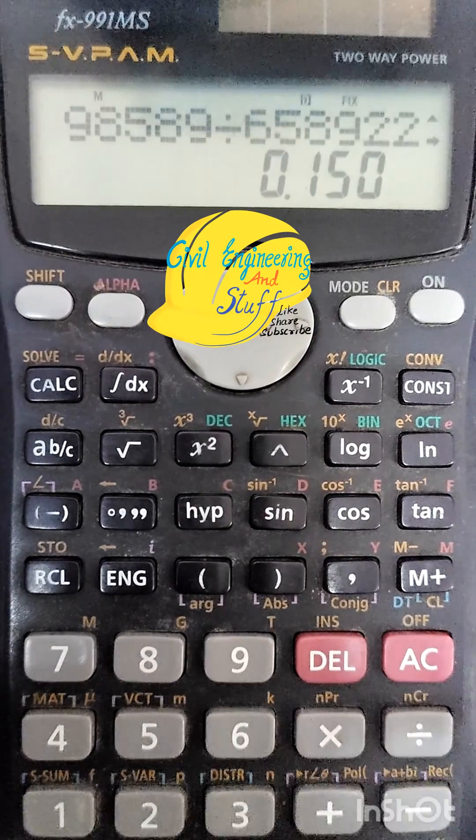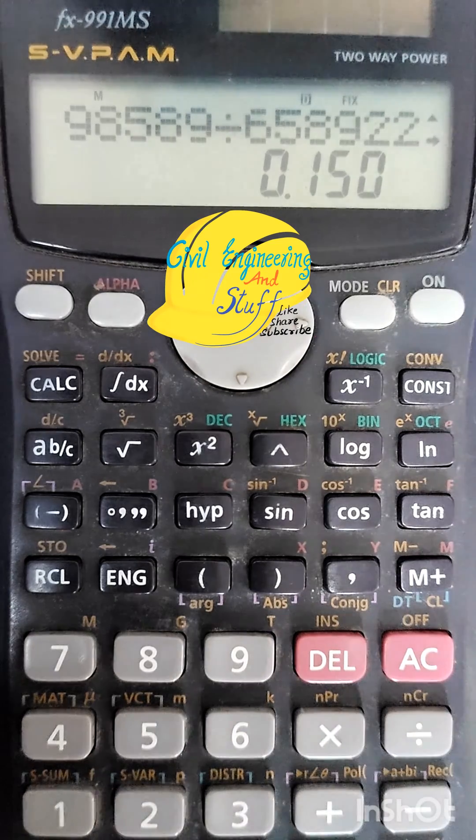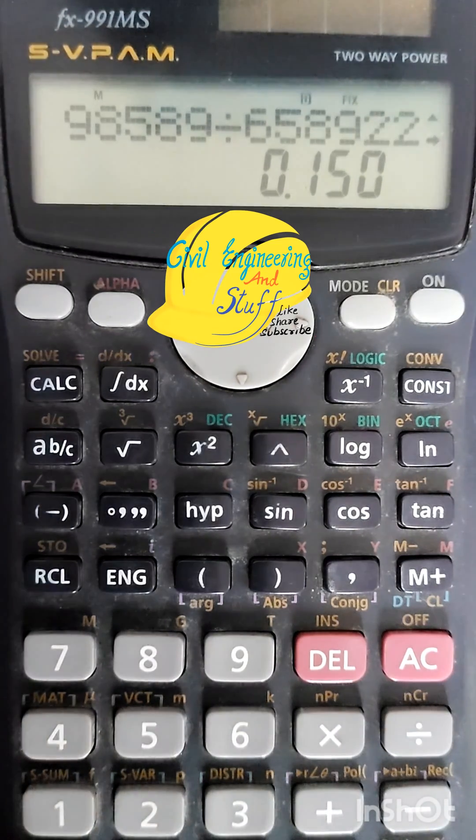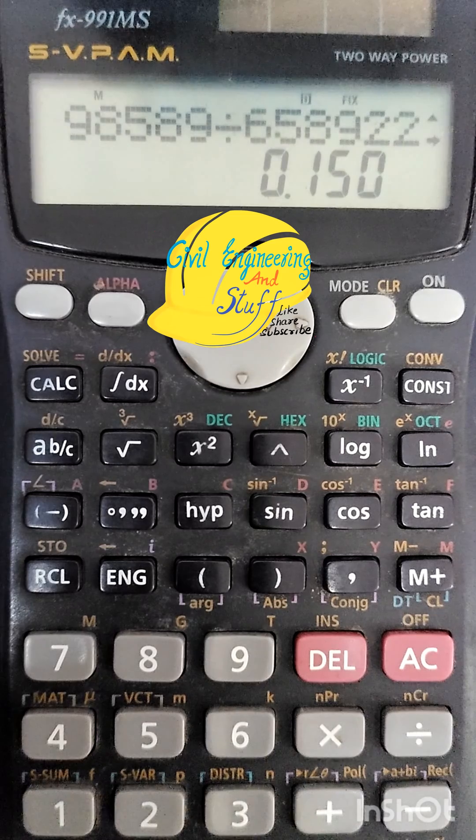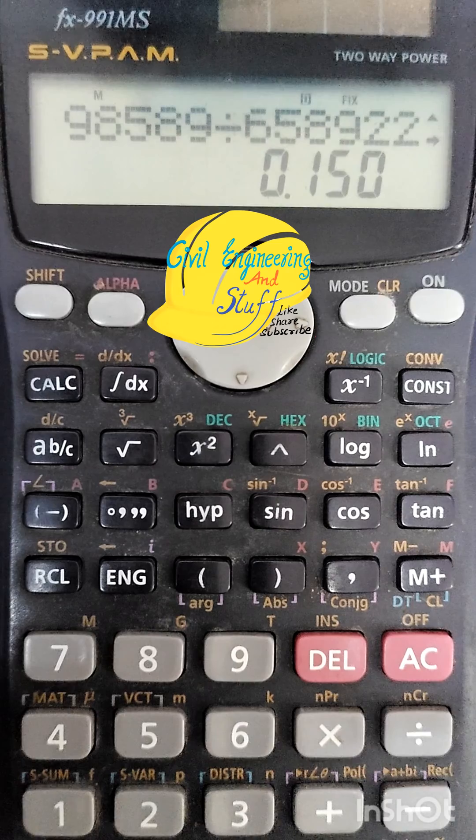So this is how you fix your values after decimal process in the 991MS calculator. I hope this video was useful to you.